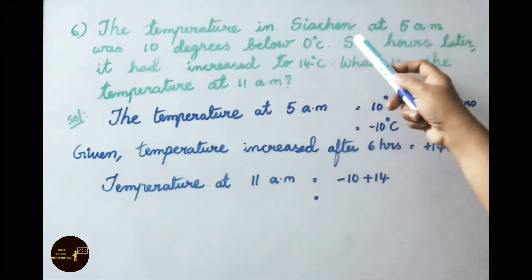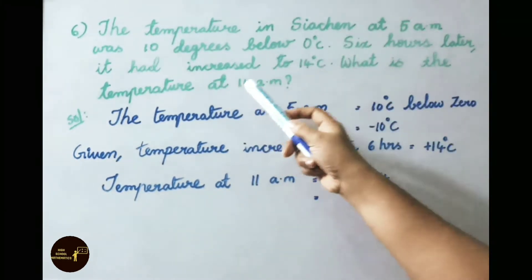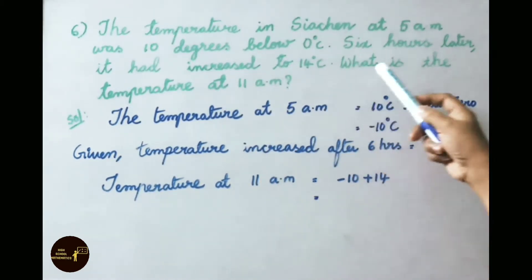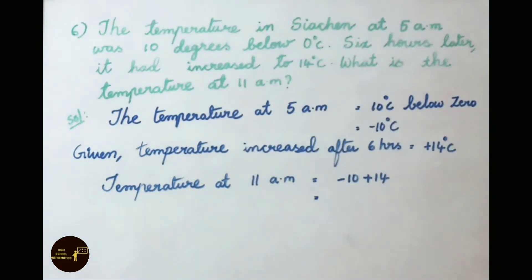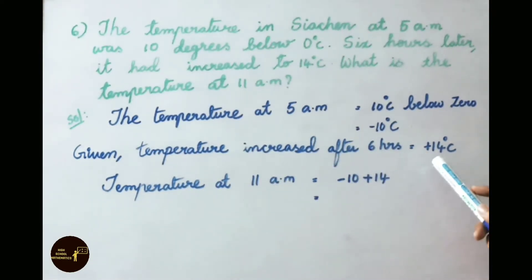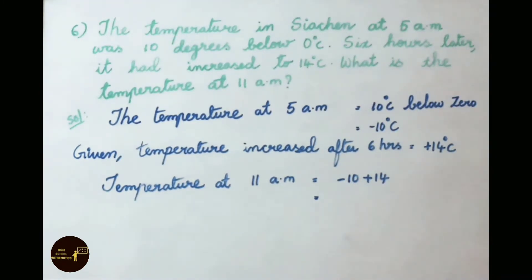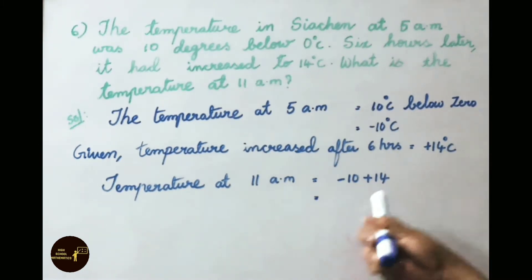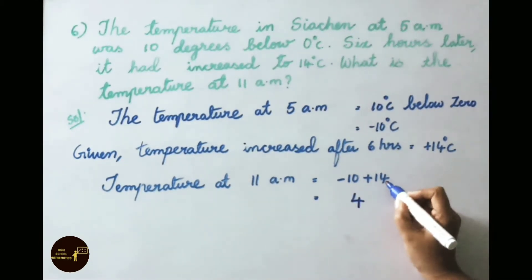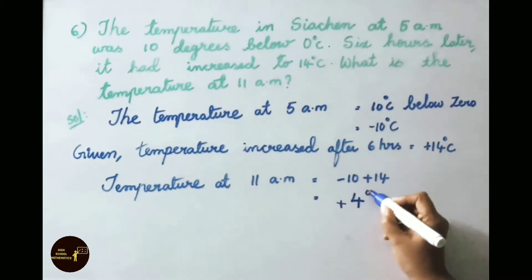See now question number 6. The temperature in Siachen at 5am was 10 degrees below 0 degrees Celsius. 6 hours later it had increased by 14 degrees Celsius. What is the temperature at 11am? The temperature at 5am is minus 10 degrees Celsius. The increase is plus 14 degrees Celsius. So temperature at 11am equals minus 10 plus 14. Opposite signs — do subtraction: 14 minus 10 equals 4. Since 14 is greatest and its sign is plus, the answer is plus 4 degrees Celsius.